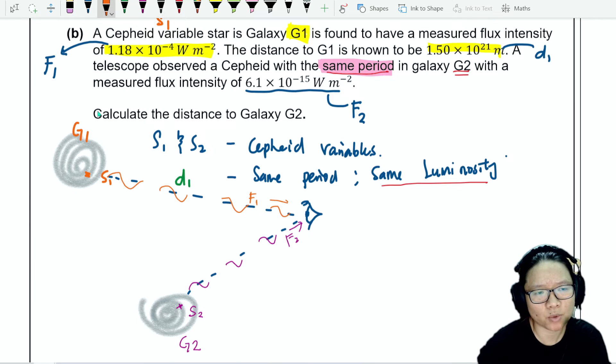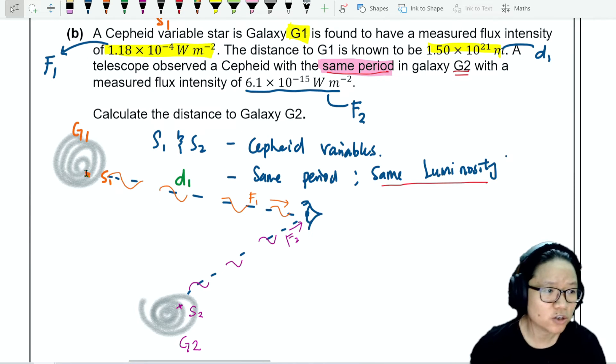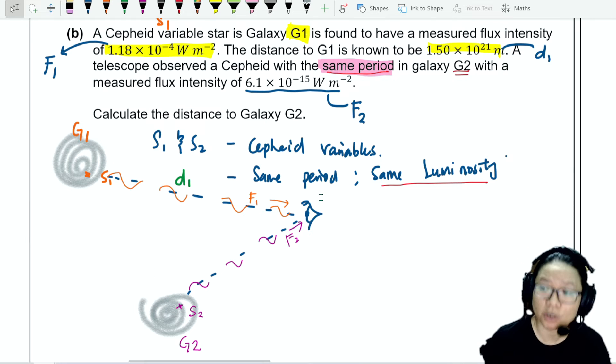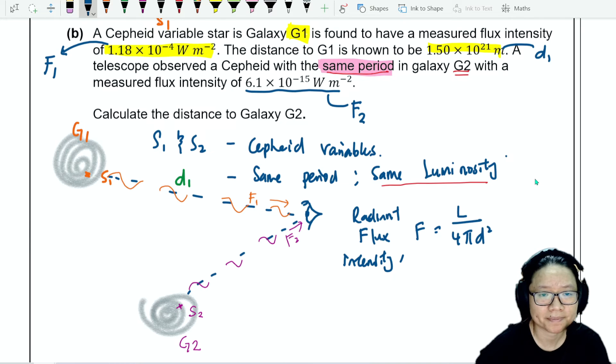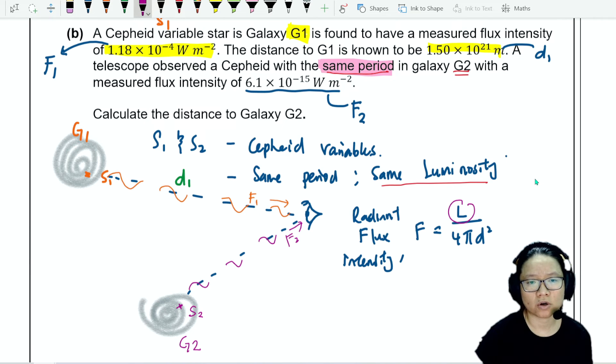So technically speaking, we are looking at two different galaxies. And we identified two stars, they are Cepheid variables, and they have the same period, so same luminosity. So if that is the case, I can then use the equation F is equal to, so think of your radiant flux intensity. F is equal to L over 4 pi D squared. So L is constant, this one constant, because they have the same period. So I can then say that the flux intensity is proportional to 1 over D squared.